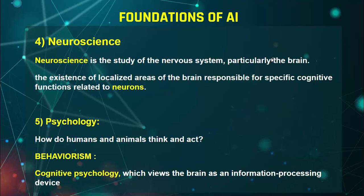The fifth foundation of artificial intelligence is psychology — how do humans and animals think and act? Humans mostly use their brains, while animals have some restrictions. We need to understand the difference between animal and human psychology, and based on that, we implement the appropriate psychology into our machine. One concept under psychology is behaviorism — human behavior is different from animal behavior.